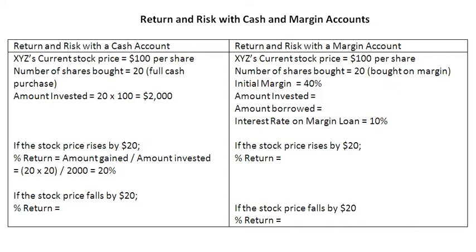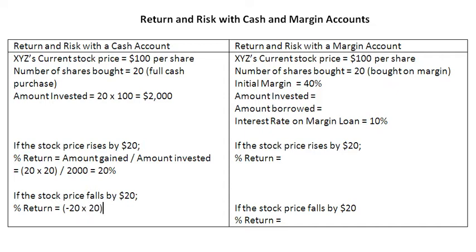Now, instead of rising, if the stock price falls by $20, then what is going to be our percentage return? We are losing $20 because the price of the stock is falling by $20. So we write minus 20, and this minus 20 is going to be multiplied by all the 20 shares, and then we divide by the amount of money invested. In this case, it gives us a negative return of 20%.